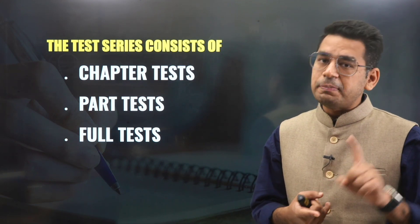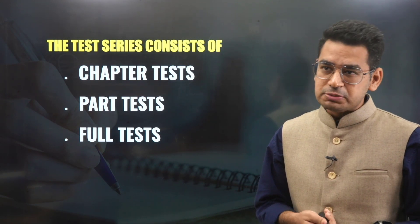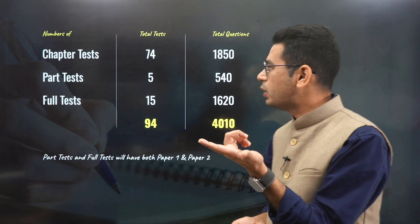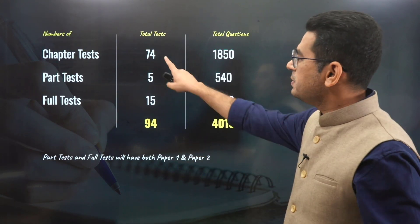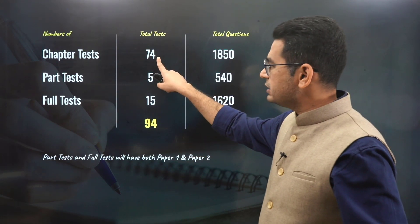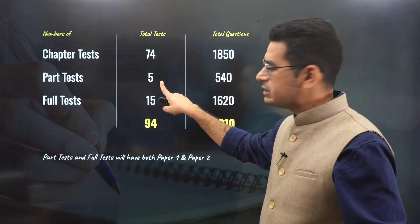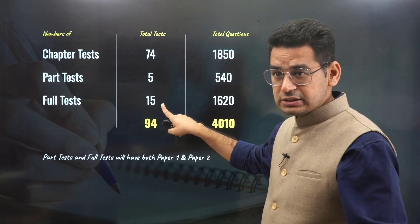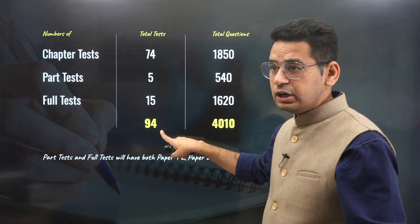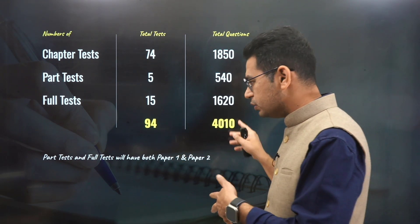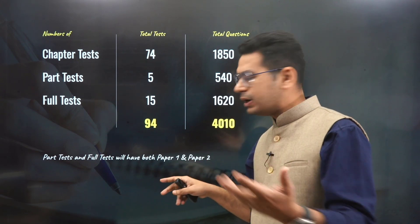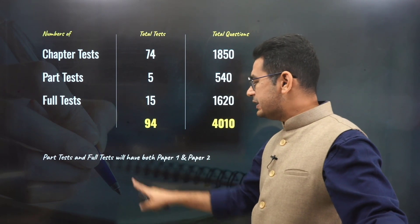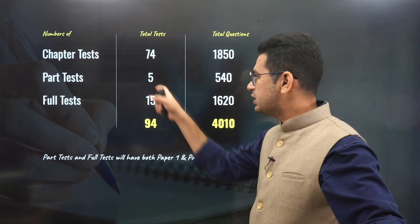What will you get? You will get chapter tests, part tests, and full tests. There will be 74 chapter tests, 5 part tests, and 15 full tests — 94 in total — along with a large number of JEE Advanced style questions. Part tests and full tests will have both Paper 1 and Paper 2, which is why the total figure is very high.